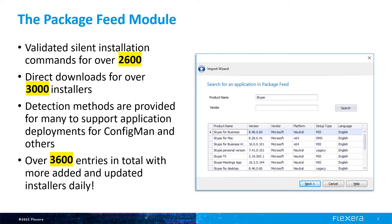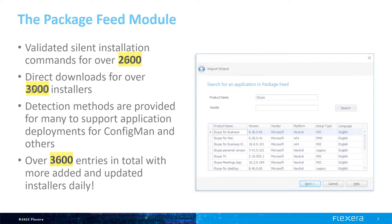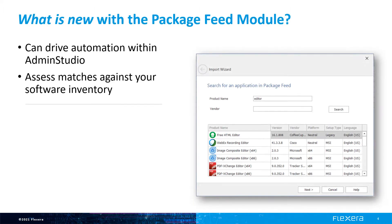And the total has jumped from 3,000 to over 3,600 entries. So in a year and a half's time, there have been thousands and thousands of updates to these applications as new versions are regularly rolled out. That was the package feed module as it was originally introduced. We then came along and added some automation, first through PowerShell commandlets and some scripts we put in the community, then we pulled that into the products.